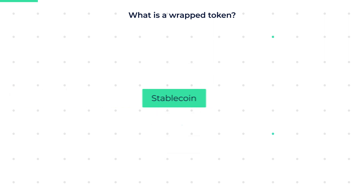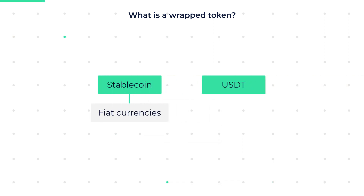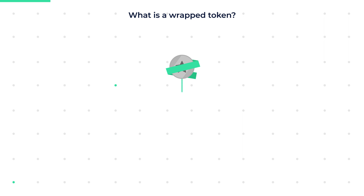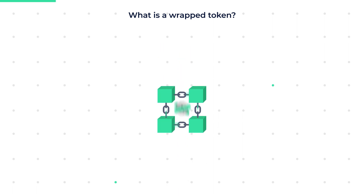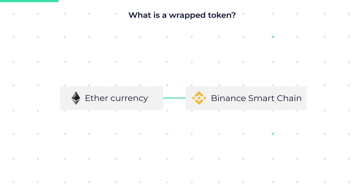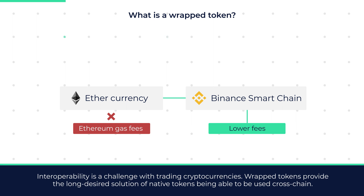To help you understand this better, think about how a stablecoin gets its value. Stablecoins have a derivative value from fiat currencies. For example, USDT is pegged to the value of the US dollar. When it comes to wrapped tokens, the asset is usually a native token of a particular blockchain existing on another blockchain. Imagine being able to use Ether on Binance Smart Chain with much lower fees compared to the more expensive gas fees on Ethereum. Interoperability is a challenge with trading cryptocurrencies, and wrapped tokens provide the long-desired solution of native tokens being able to be used cross-chain.